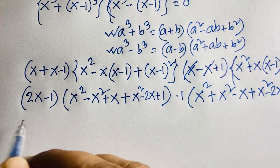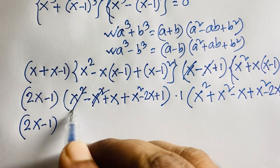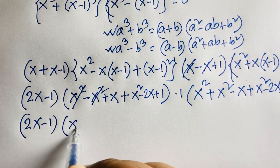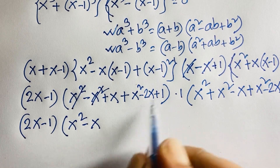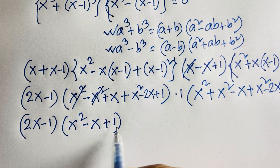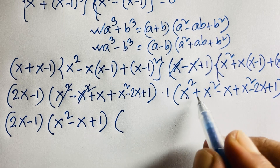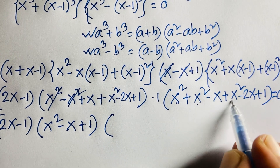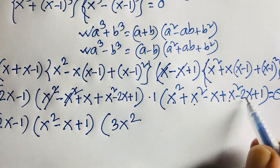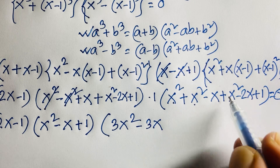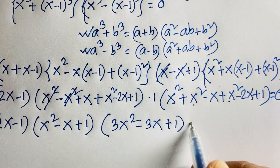After simplification, collecting all x² terms gives 3x², and collecting all x terms gives minus 3x, plus 1. Also we have the factor 2x minus 1. So the full equation factors as (2x-1) times (x² - x + 1) times (3x² - 3x + 1) equals 0.